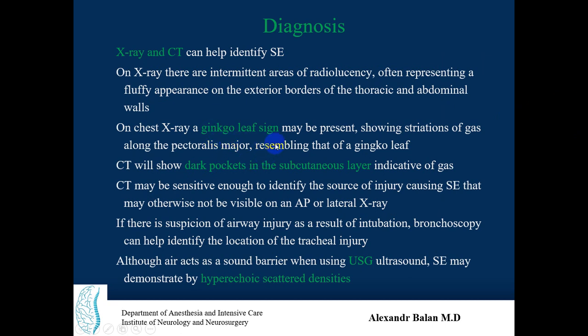On chest X-ray, air is visible outside the thoracic cage. The 'ginkgo leaf sign' may be present — strong striations of gas along the pectoralis major. A CT scan of the chest will show dark pockets in the subcutaneous layers, indicative of gas. CT scan is more sensitive and can identify the source of injury causing subcutaneous emphysema that may otherwise not be visible on anterior-posterior or lateral X-ray views.